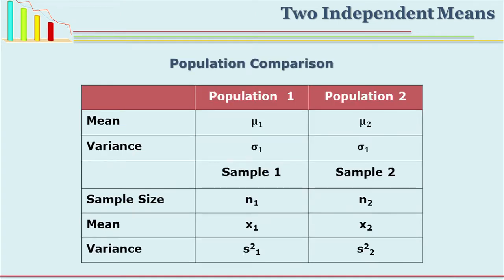If you prepare a matrix for uncorrelated means, you have population one and population two. The mean of population one is mu one and mean of population two is mu two; variance is given by sigma one and sigma two. At the sample level, sample sizes are n1 and n2, means are x1 and x2, and variances are s1 and s2. Now let us see how to compute and find out whether the difference between two uncorrelated means is significant or not.